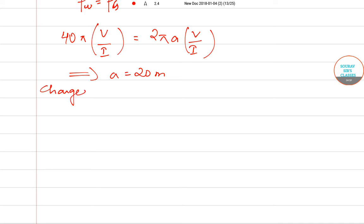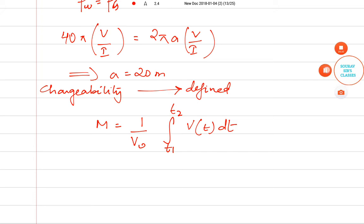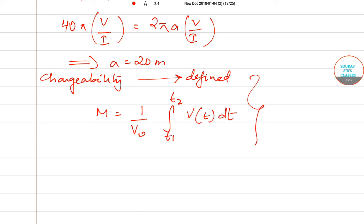Chargeability is actually defined as M = (1/V₀)∫(t1 to t2) V(t)dt. It is given to us that... okay, I apologize because this part of chargeability they haven't asked, so this was an extra part I was doing. Let me skip that. The answer becomes a = 20. So we have a = 20.